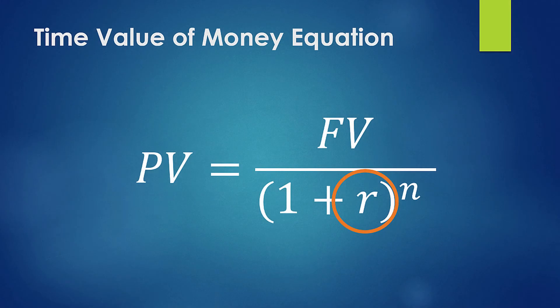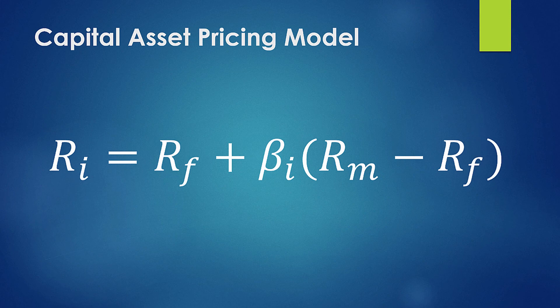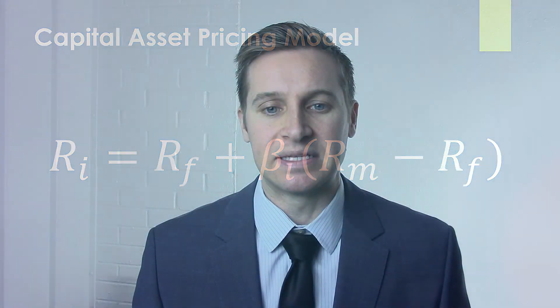To bring it back to the Capital Asset Pricing Model — the question becomes, how do we calculate the risk rate? How do we actually get the number to plug into this equation? That's what the CAPM is for. There are lots of different ways you could go about getting a rate for risk, but the CAPM is a generally accepted approach in finance for calculating these rates and doing it in a consistent manner across your portfolio. In the next video, we're going to walk through the Capital Asset Pricing Model — the equation and each of the variables involved.